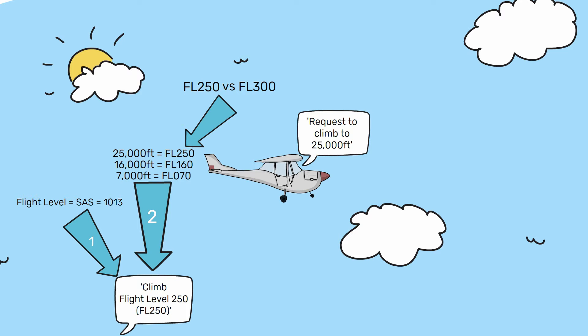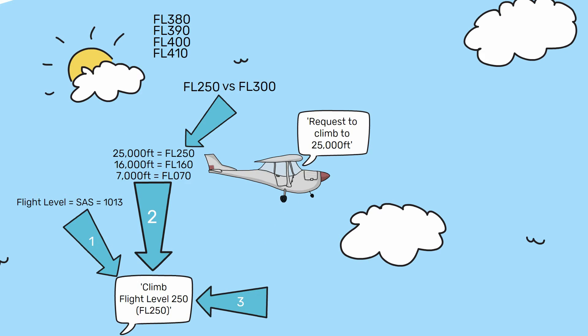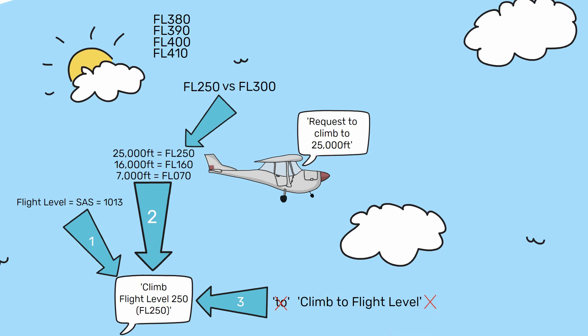An additional point is how these numbers are read. When we say flight level 250, each number is said separately, but flight level 300 is read out in full, as is every other 100. Here is an example of changing between the different formats: flight level 380, flight level 390, flight level 400, flight level 410. Thirdly, you may have noticed the word 'to' was omitted. When using flight levels, we do not say 'climb to flight level.' The phraseology must be 'climb flight level.' This is again to distinguish the difference between flight levels and height and altitude.